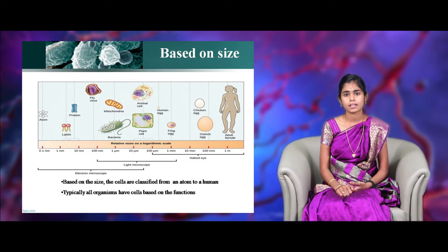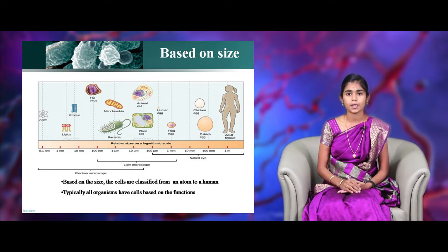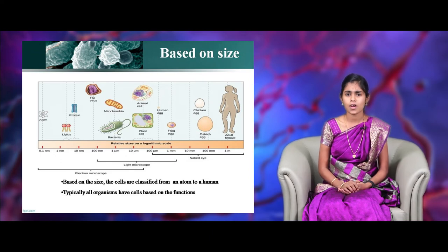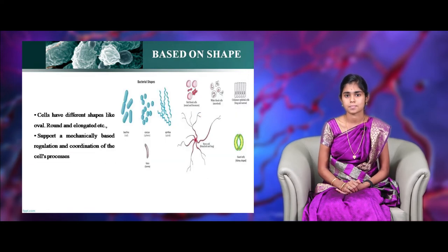In this picture, you can see the different sized cells and organisms from an atom to a human. The size of the cells varies only based on its performance. It is not that elephant is having large sized cells and rats are having small sized cells. Only based on the performance, the size of the cells varies for all organisms.